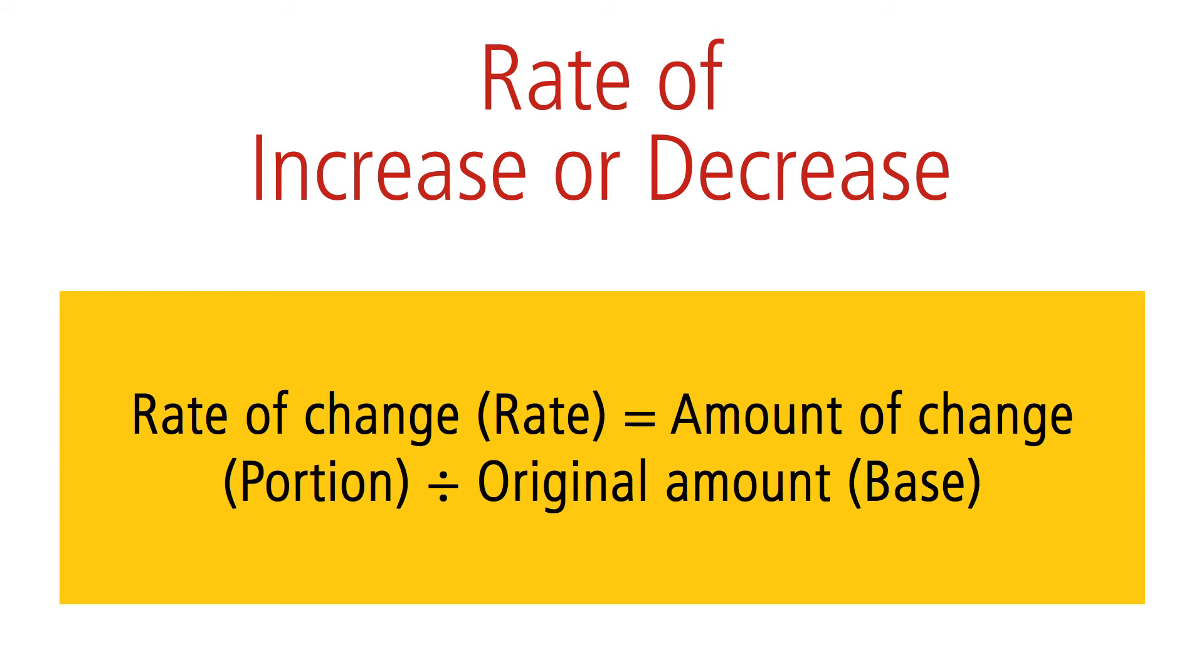In calculating the rate of increase or decrease of something, we use the same percentage formula concepts as before. Rate of change means percent change. Therefore, the rate is the unknown. Once again, we use the formula R equals P divided by B.